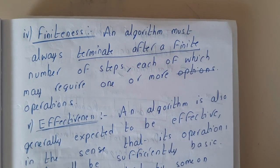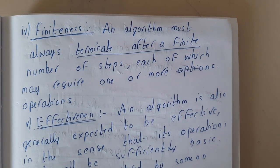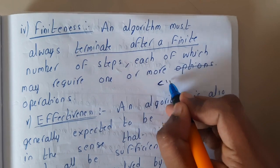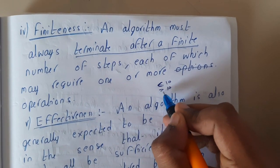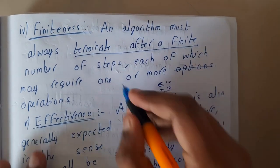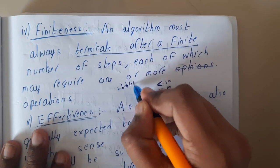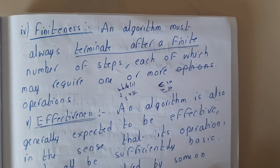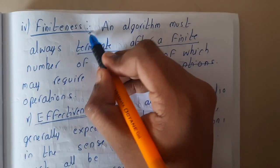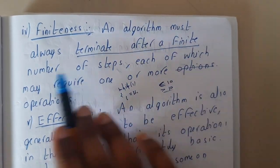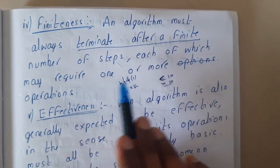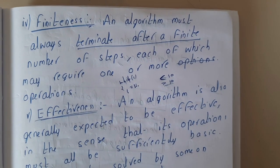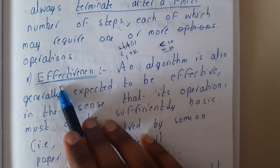Finiteness: assume you wrote an algorithm to print numbers from one to ten, but accidentally used 'greater than 10' instead of 'less than 10', or wrote 'while(1)' printing Hello World continuously — there is no termination. That is not a good algorithm. An algorithm must always terminate after a finite number of steps, each of which may require one or more operations. Based on some operations it should end at some point.